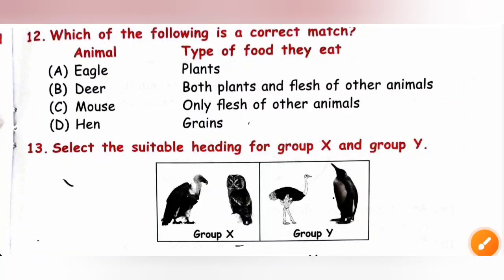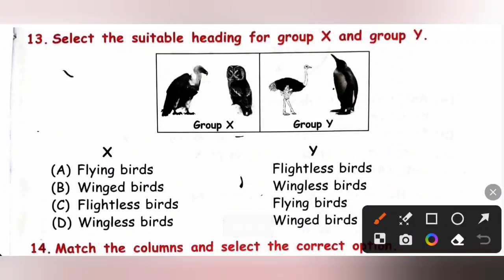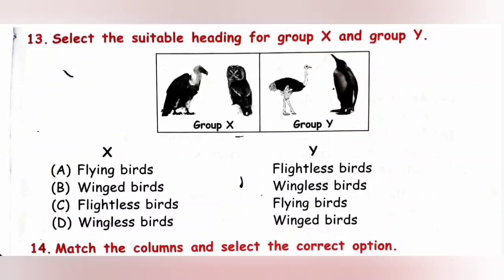Question 13: Select the suitable heading for group X and group Y. In group X we have vulture and owl; in group Y we have ostrich and penguin. Owl and vulture are flying birds; ostrich and penguin are flightless birds. So group X is flying birds and group Y is flightless birds. Option A is the correct answer.